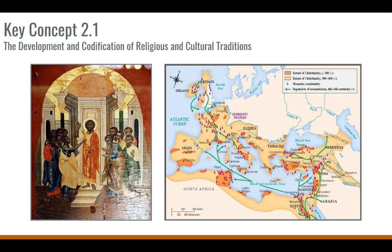Christianity spread throughout the Mediterranean and to many different parts of Afro-Eurasia. Eventually, Christianity gains imperial support. The emperor of Rome, Constantine, converts to Christianity and makes it a legal religion, giving total religious freedom. Later, the emperor Theodosius bans all other religions except Christianity, which really cements its place in the Mediterranean region.